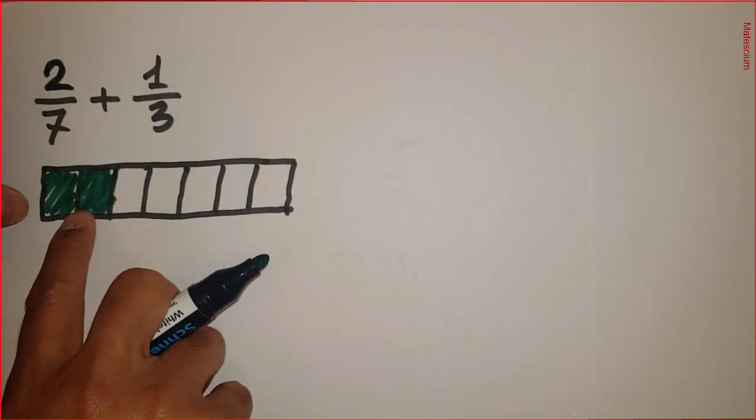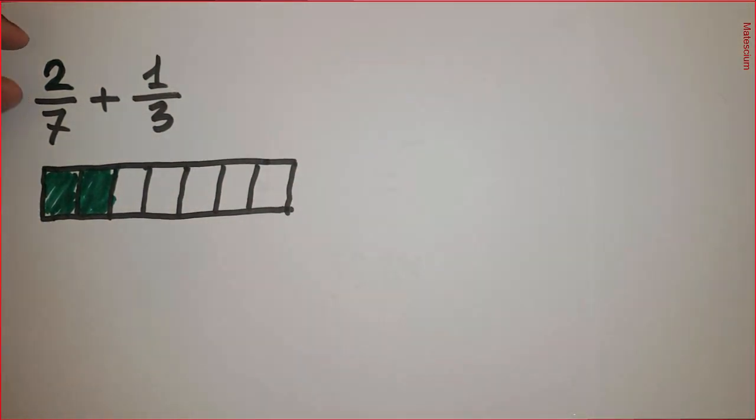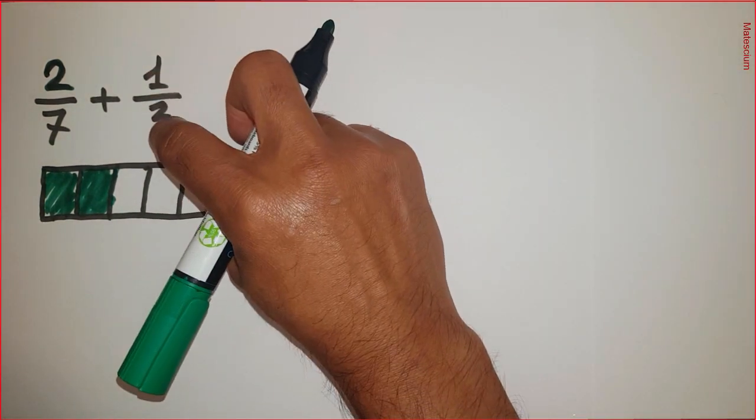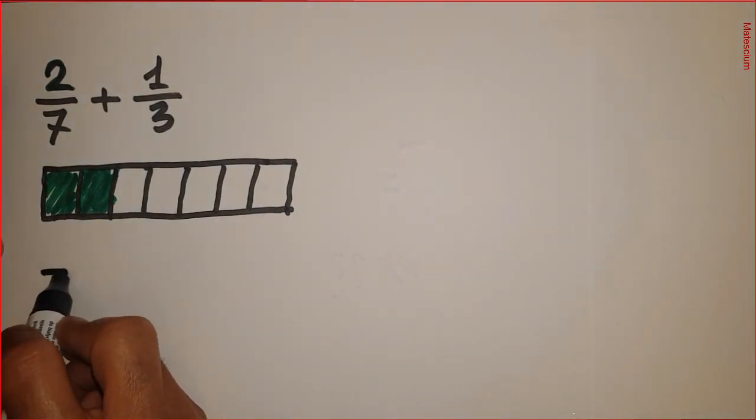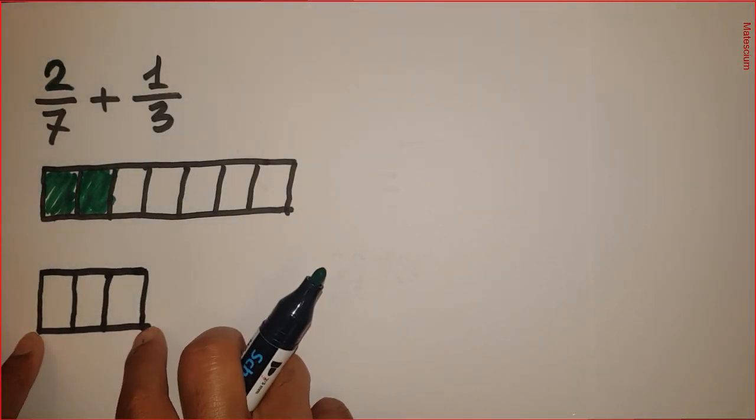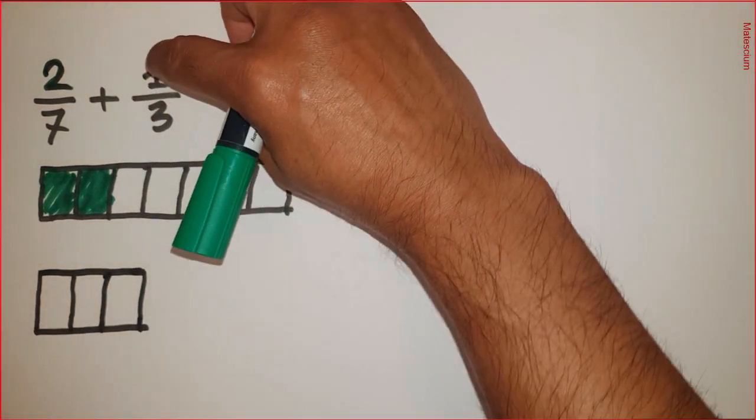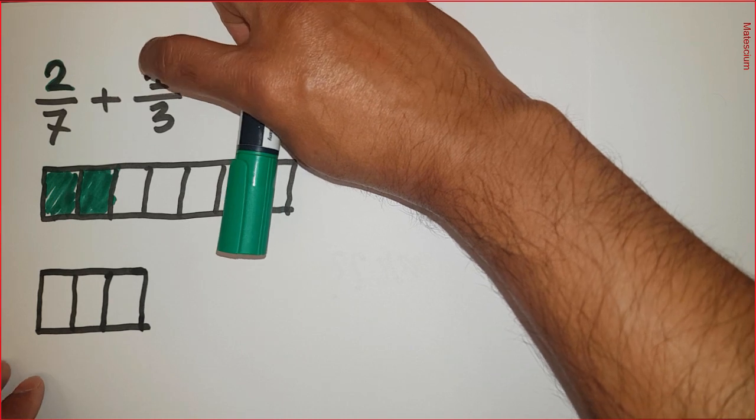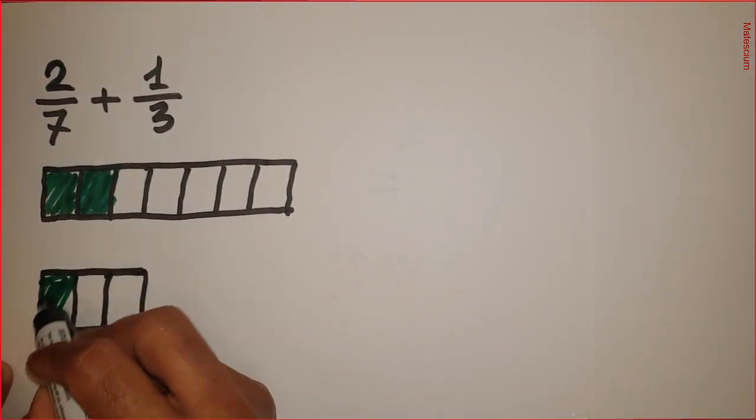That means these two out of this 7. So this part representing 2 over 7 and then 1 over 3 means similarly 1 out of 3. I can draw this part similarly by this way. This rectangular box subdivided into 3 parts that represent this 3 and this 1 over 3 means 1 out of 3. So I can take this 1 from this 3 by using this different color.